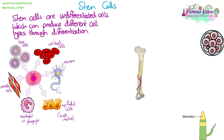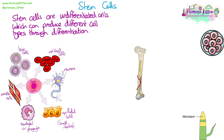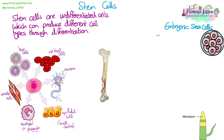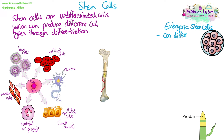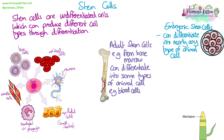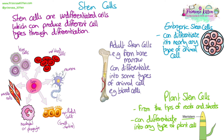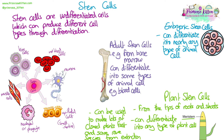Stem cells. Stem cells are undifferentiated cells which can produce different cell types through differentiation. There are three types: embryonic stem cells, which can differentiate into nearly any type of animal cell; adult stem cells, found in bone marrow, which can differentiate into some types of animal cells such as blood cells but not all types; and plant stem cells, found in the tips of roots and shoots — known as meristems — which can differentiate into any type of plant cell. Because plant stem cells can differentiate throughout their whole life, we can use this to clone plants quickly, which is useful for saving rare species from extinction.